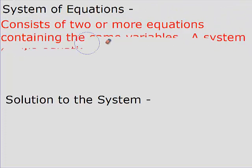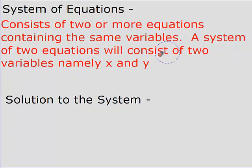So for us, a system of equations consists of two or more equations containing the same variables. A system of two equations will consist of two variables, namely x and y. A system of three equations will contain either two or three variables — it cannot contain more variables than the number of equations it has. If you have five equations, you cannot have six variables because there's no way to solve them; you can only solve one variable per equation. They have to contain the same variables.